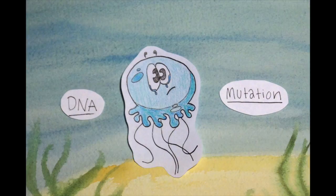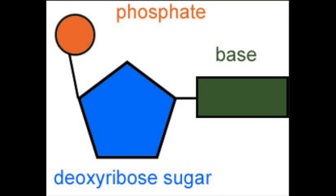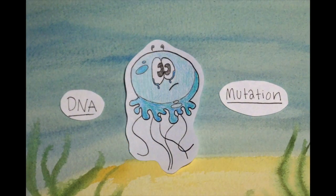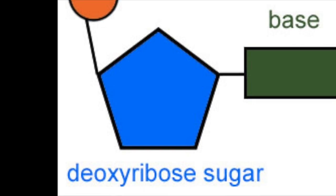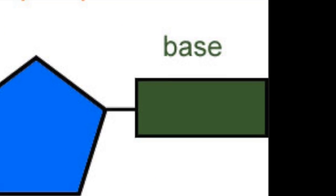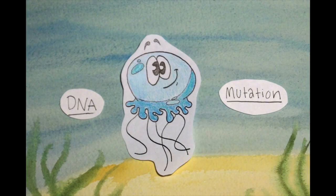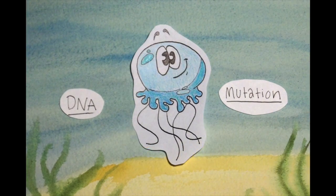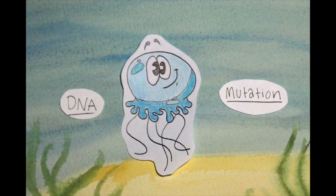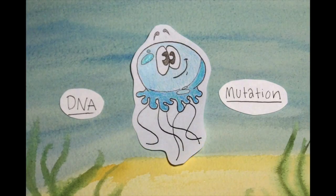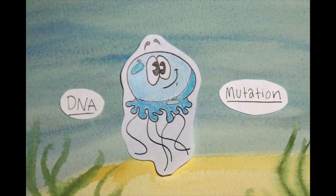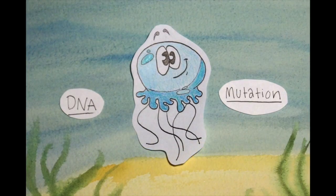DNA is made out of nucleotides, which are made out of three pieces: a sugar, phosphate, and a nitrogenous base. Where does DNA come from? Your DNA came from your parents' DNA. You started off as one cell, and then that cell copied itself over and over to create more specialized cells, which form tissue, and so on, until you formed a whole organism.